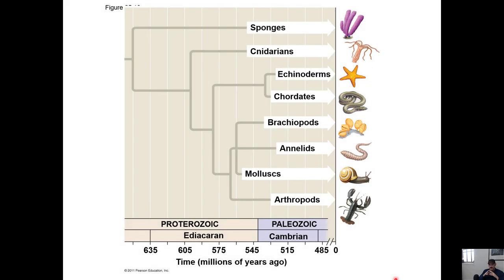We've talked about sponges - the fact that they don't have tissues, which makes them the outgroup of the animal kingdom. Cnidarians have two body tissue layers, those two germ layers that develop into body tissues. They have stinging cells and a gastrovascular cavity, and they come in polyp and medusa body forms.